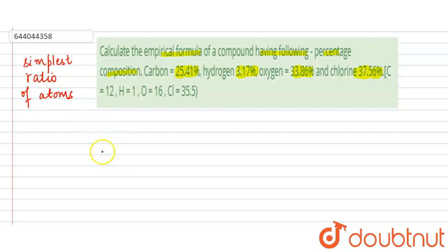First, let us write down all the elements. We have carbon, hydrogen, oxygen, and chlorine. We are given their percentages, meaning the compound has 25.41% carbon, 3.17% hydrogen, 33.86% oxygen, and 37.56% chlorine. We will write their percentage given: 25.41, 3.17, 33.86, and 37.56.